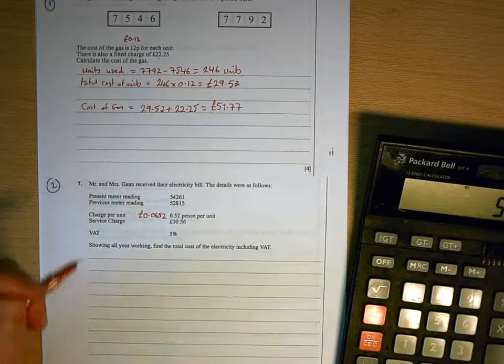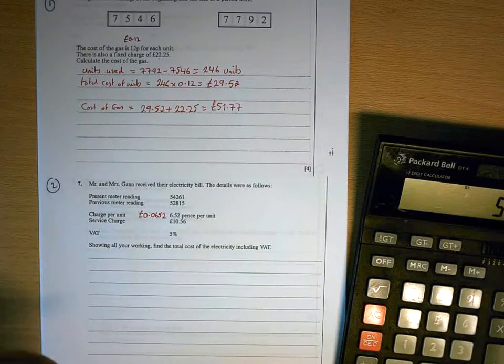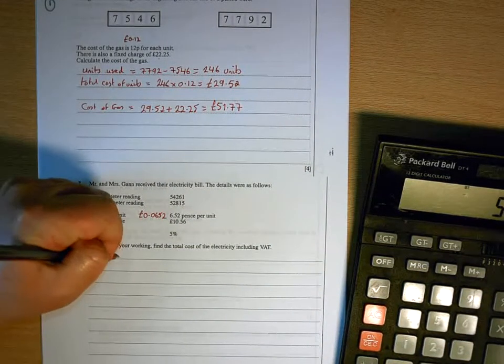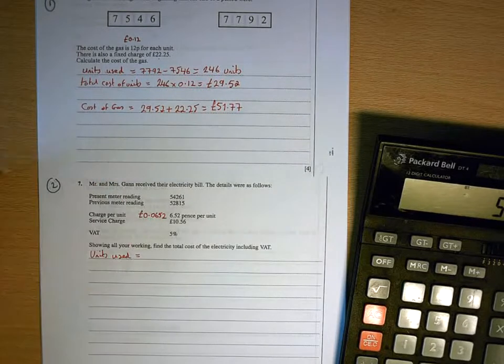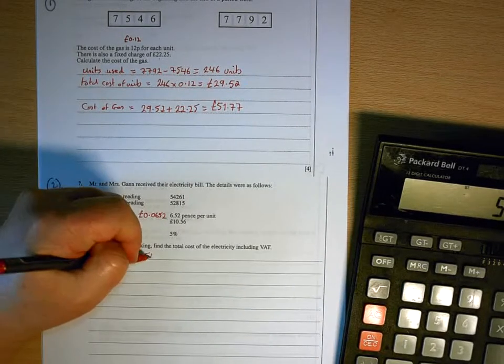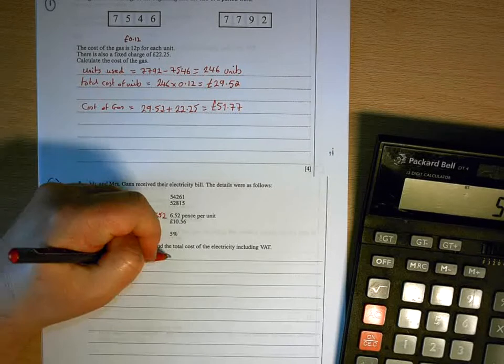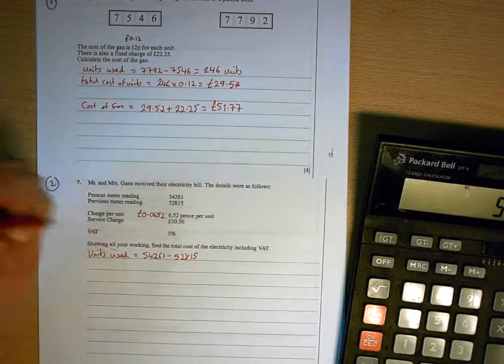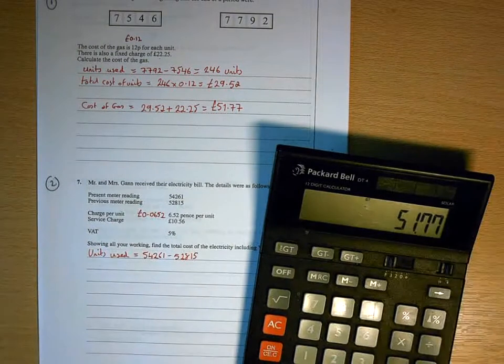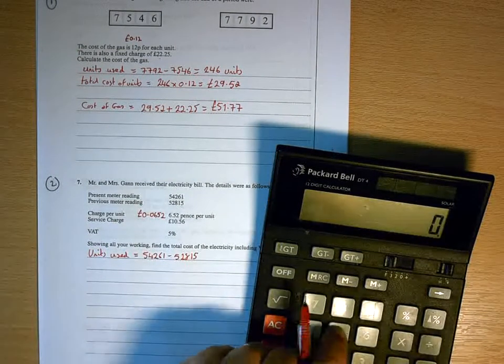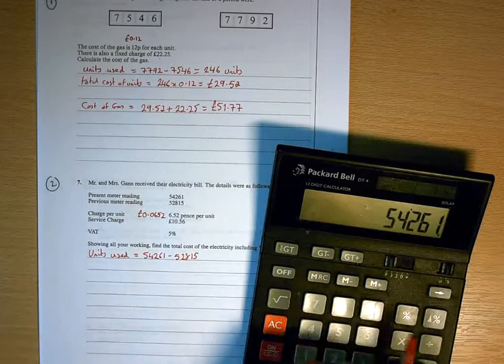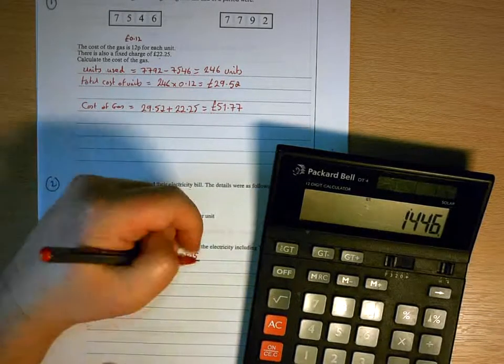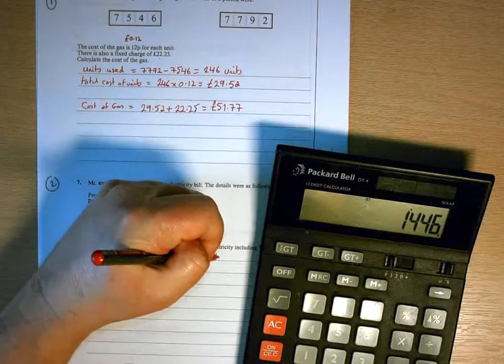The first part of this question is identical to the previous question. We've got the number of units used by subtracting the two meter readings. 5426 minus 5281. So that's 1,446 units.